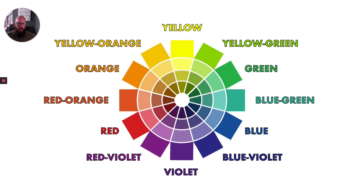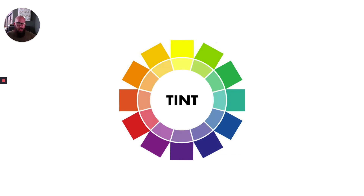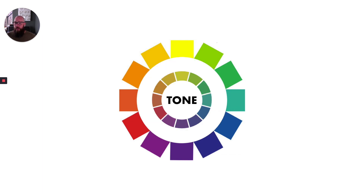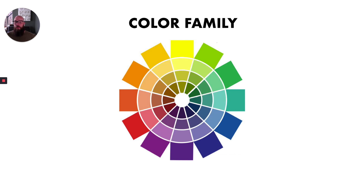The outermost ring of this color wheel shows hue — each color in its purest form. The next ring in is tint, the lighter value of a color blended with white. The next ring demonstrates tone, a color blended with gray. The innermost ring shows shade, which is the color mixed with black. Pulling out, you can see the full color wheel with its hue, tint, tone, and shade. Each pie-shaped section is often referred to as a color family.